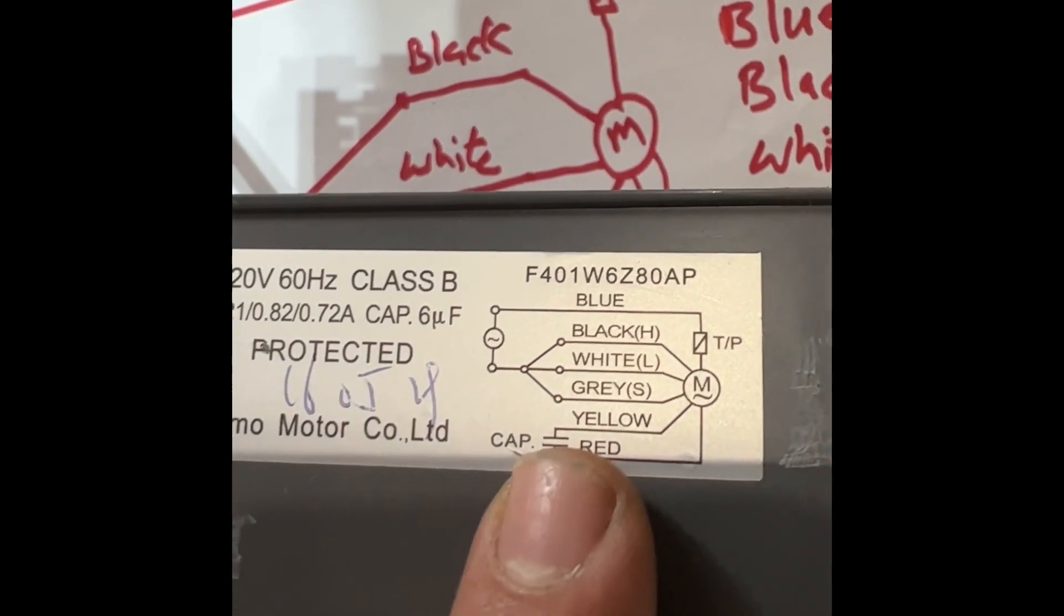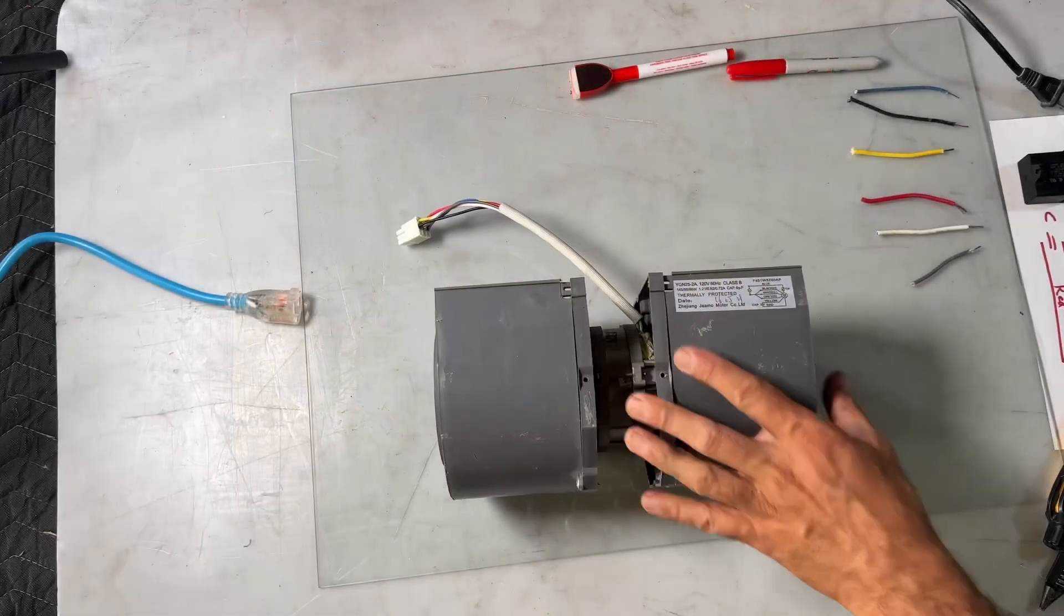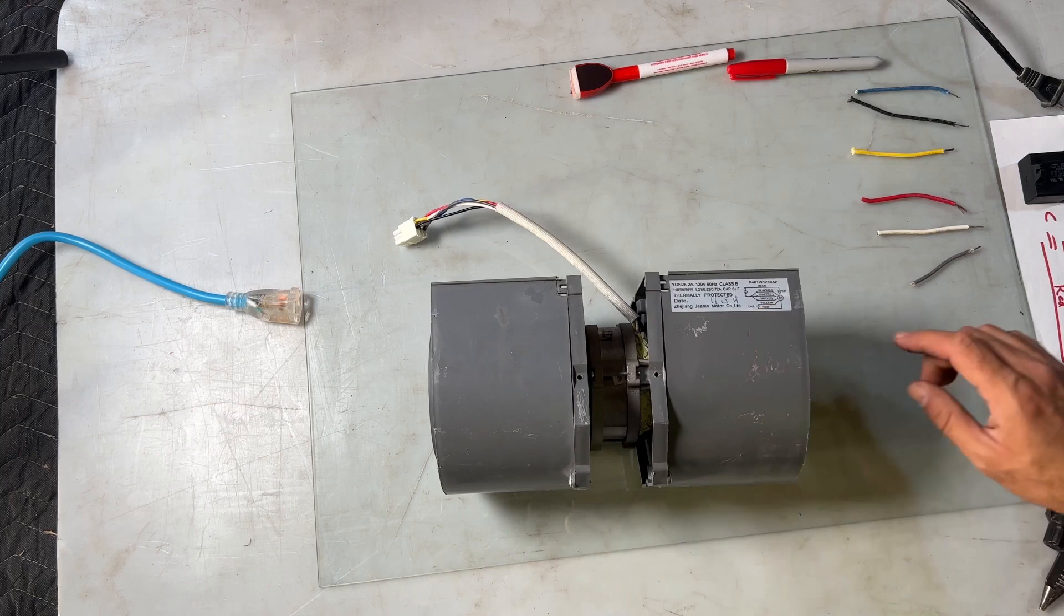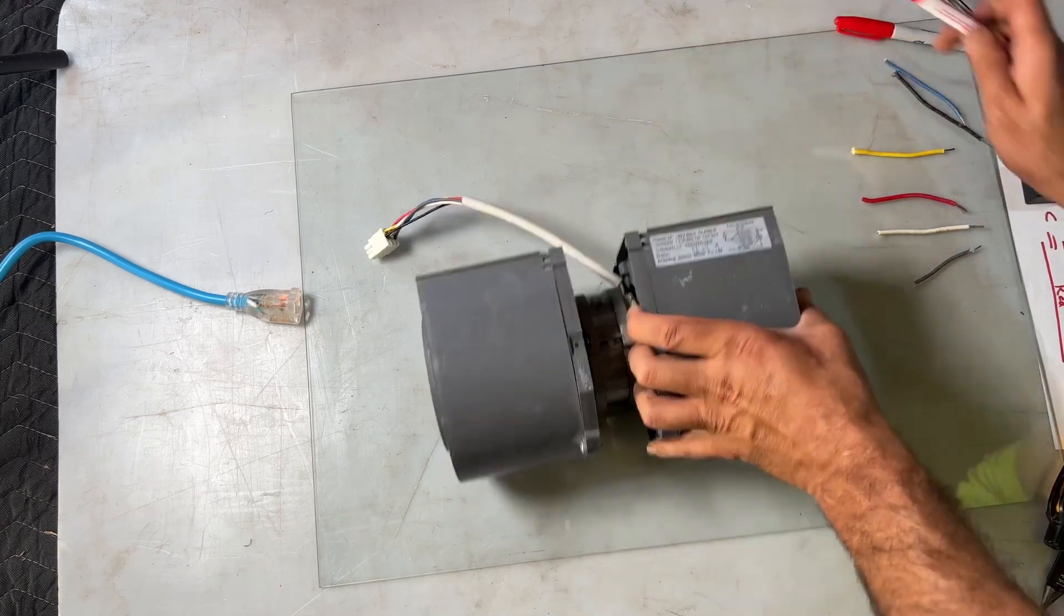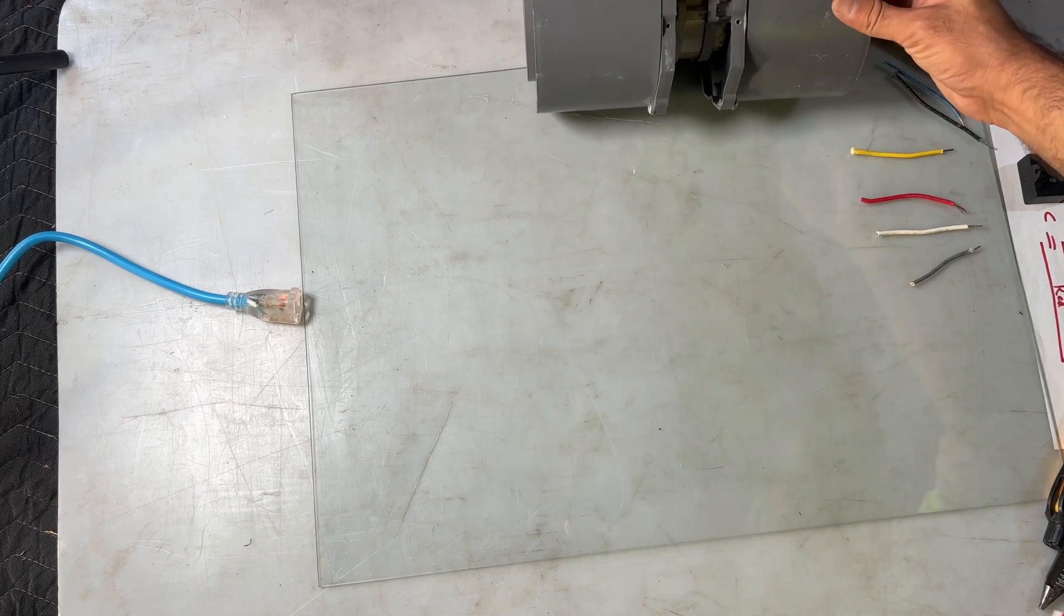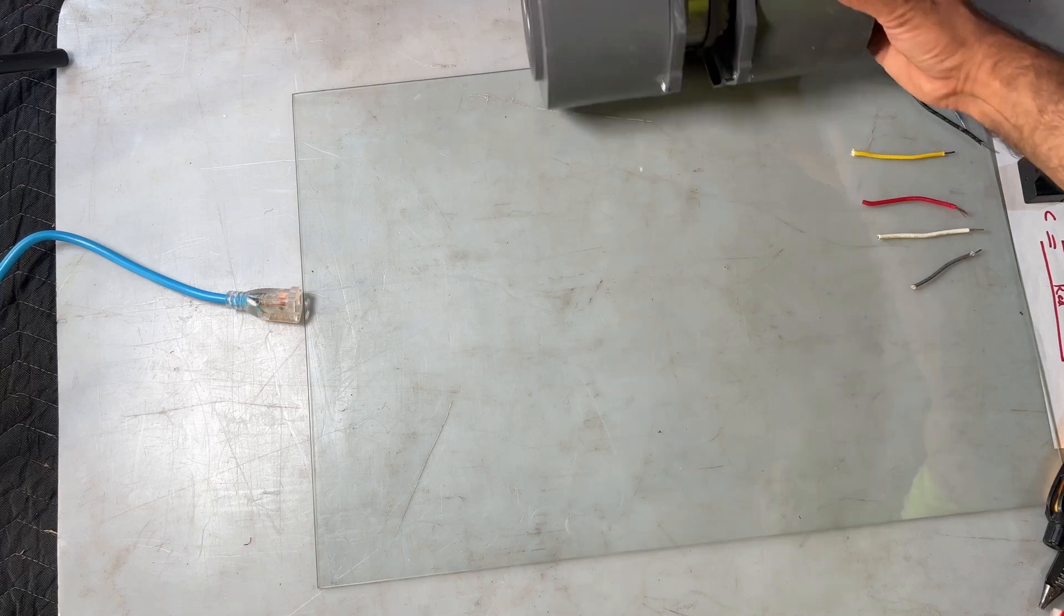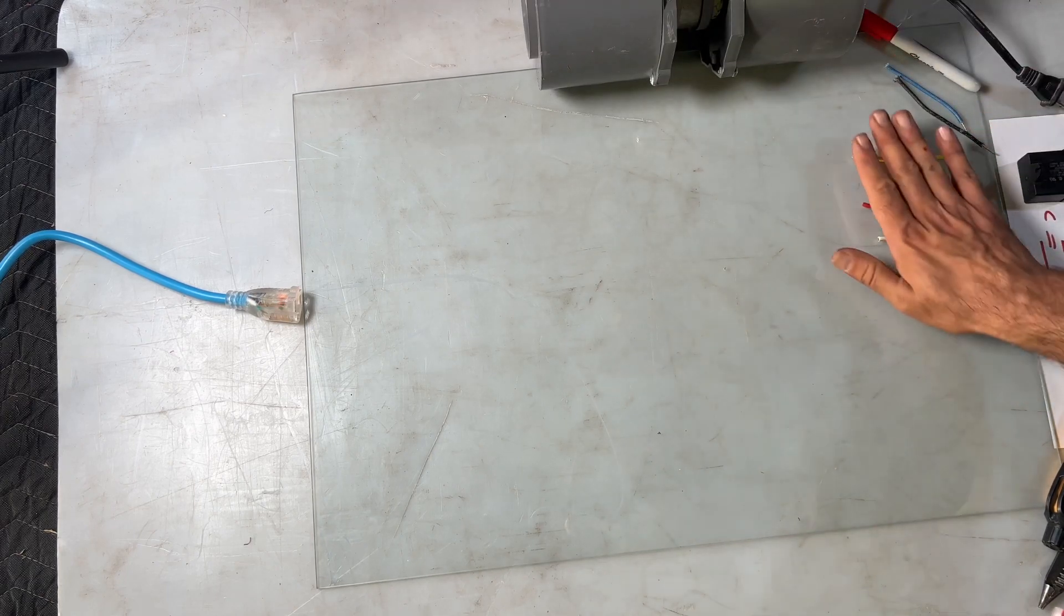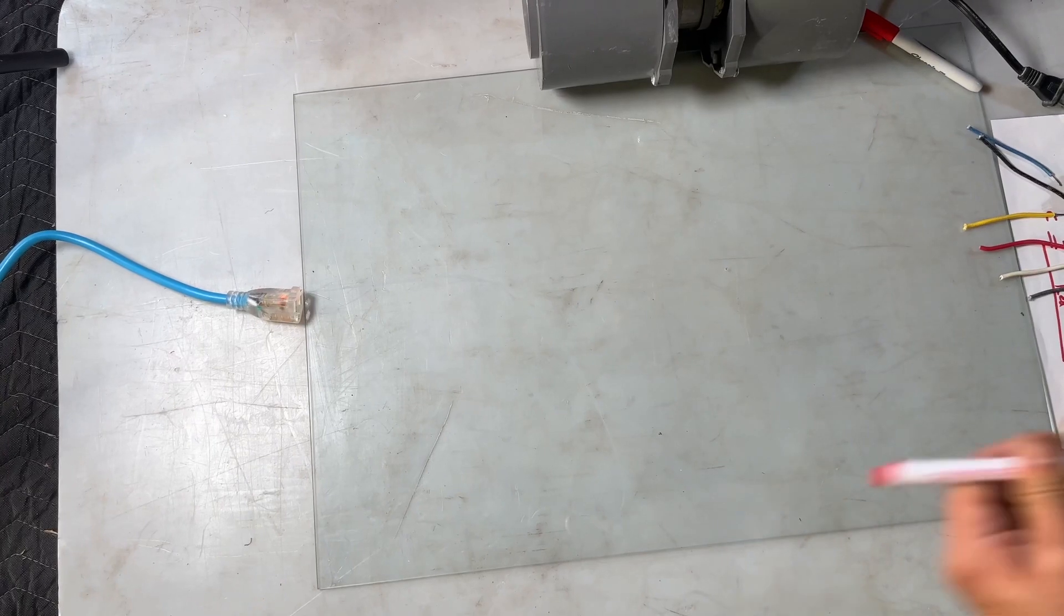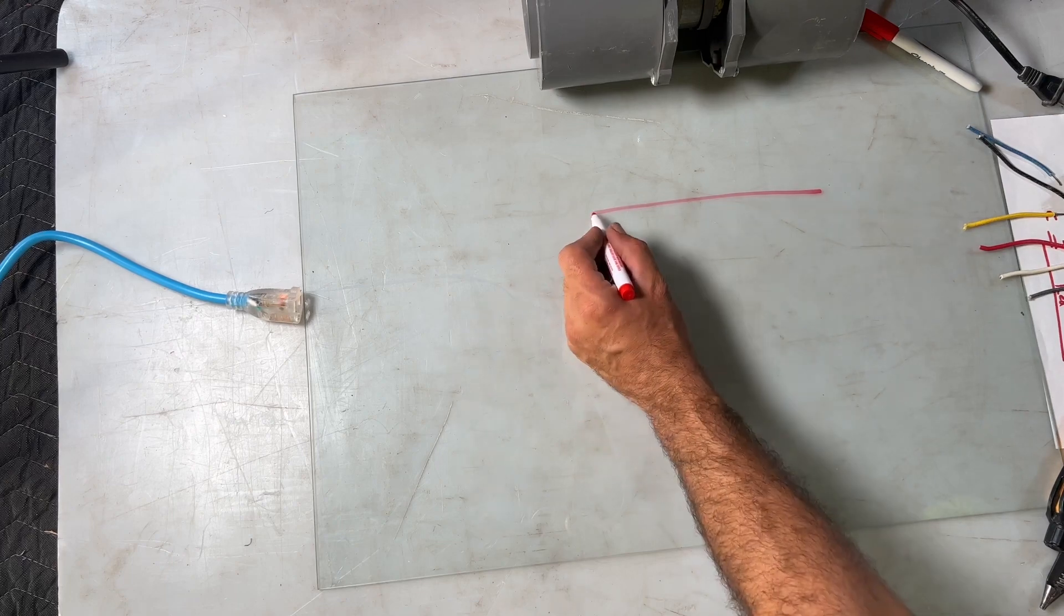Yellow and red goes to the capacitor, remember these two wires. So first of all, I'm going to draw this wiring diagram here on the glass. According to that wiring diagram, I'm going to make a bigger wiring diagram here so that way you can understand the process here.